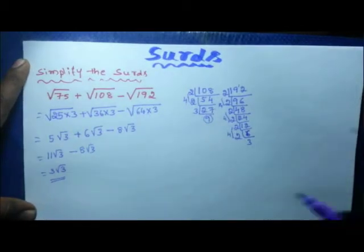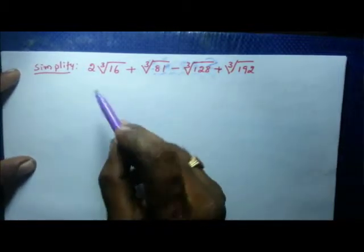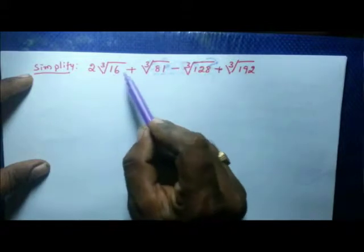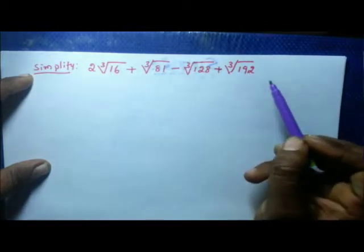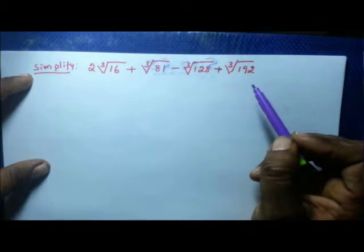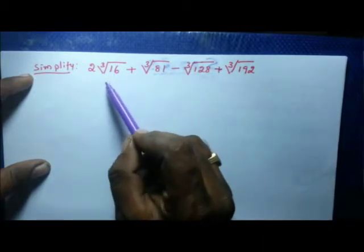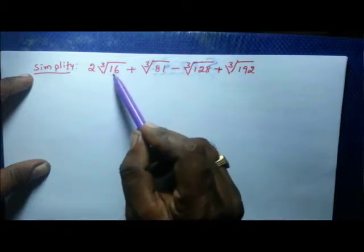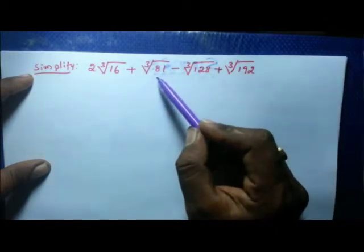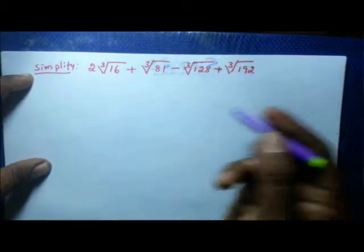Next we go to cube roots — how to simplify surds when cube root is given. The problem is: cube root of 2 into cube root of 16, plus cube root of 81, minus cube root of 128, plus cube root of 192. The last problem had square root; now it is cube root. First, simplify or reduce each term to simplest form by writing each as a cube number times another number.